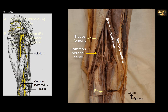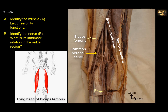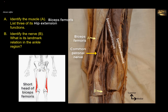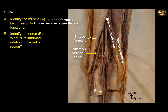The biceps femoris has a long head that arises from the ischial tuberosity — it is a hamstring muscle arising from the common origin of the hamstring muscles. Therefore it acts on the hip joint, so it extends the hip. It passes behind the knee joint and is joined by the short head of biceps femoris, which arises from the femur and does not act on the hip joint, but acts on the knee together with the long head as they are fused together to attach to the fibula — so they flex the knee. The third action is that because they are attached to the lateral side of the knee joint, they can laterally rotate the leg when the knee is flexed. When the knee is extended, it cannot be rotated medially or laterally — it is a hinge joint.